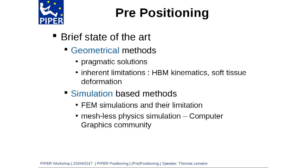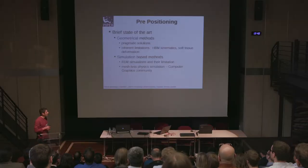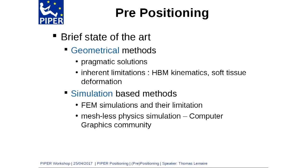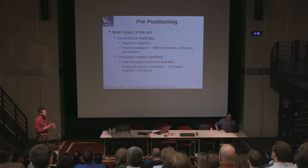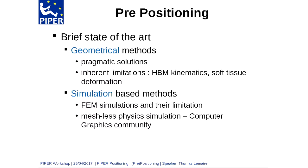Doing a brief state of the art, we can split the approaches into two categories. The first are geometrical methods, which will be presented later by Anup with contour-based positioning. These are pragmatic solutions — you know what you will get — but they have inherent limitations regarding how to fulfill the HBM kinematics and soft tissue deformation. There is also another set of simulation-based methods. I will skip FEM simulation as it is the state of the art of today's positioning process.